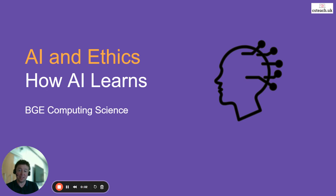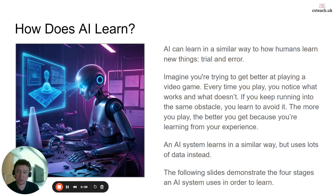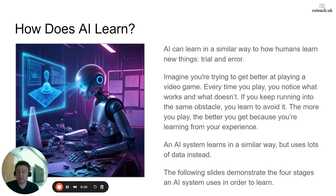Welcome to lesson two of the AI and ethics module. My name is Mr. Simpson and today we're looking at how AI learns. Really it's just trial and error — this computer program that we talked about in the last lesson, that can learn and predict things based on new data, uses trial and error in order to build its model of the world.